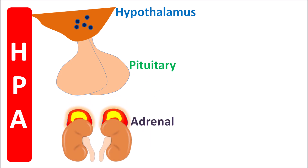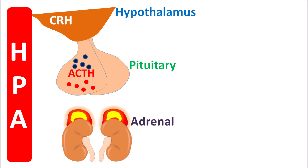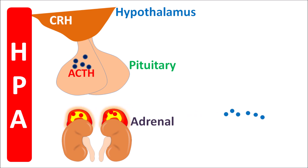From the hypothalamus, CRH — corticotropin-releasing hormone — is released, which can act on the anterior pituitary. When the anterior pituitary is stimulated, it releases another mediator, ACTH. This ACTH can act on the adrenal cortex, where it releases the important mediator cortisol. In this way, when the HPA axis is activated, cortisol is released.